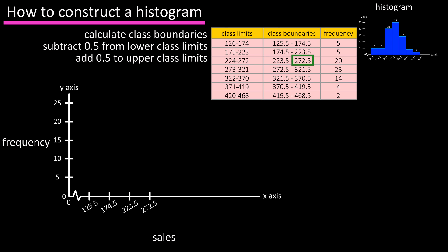Then 272.5, the upper boundary of class 3, 321.5, the upper boundary of class 4, and 370.5, 419.5, and 468.5 for the remaining upper class boundaries.